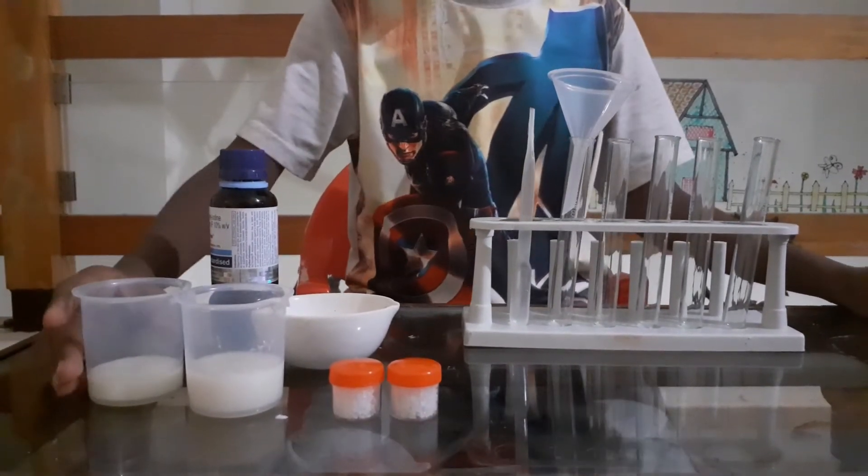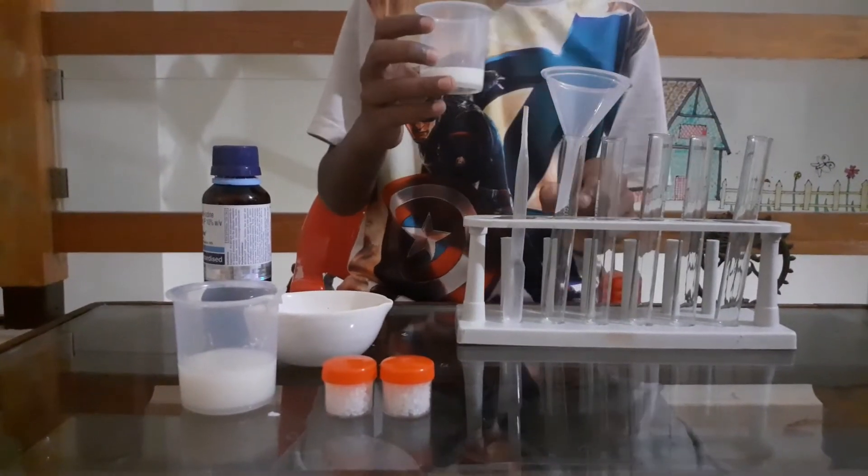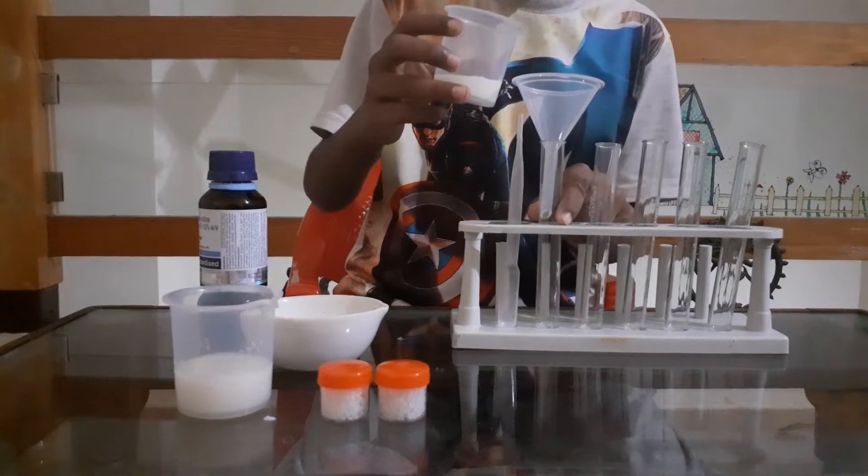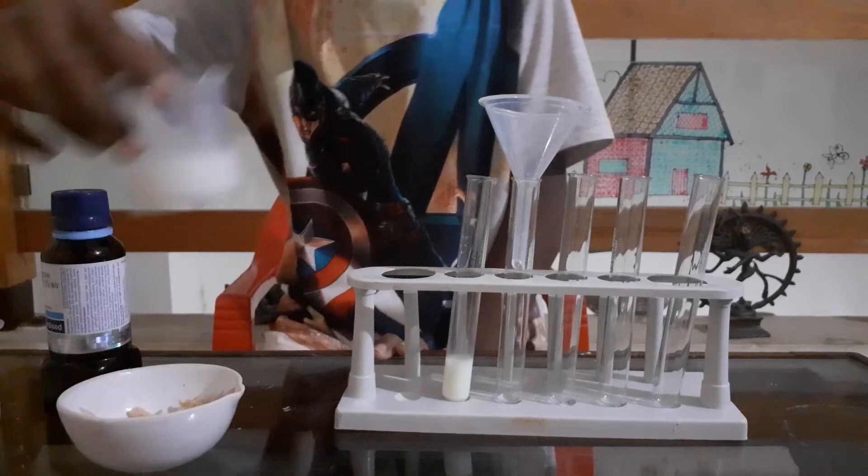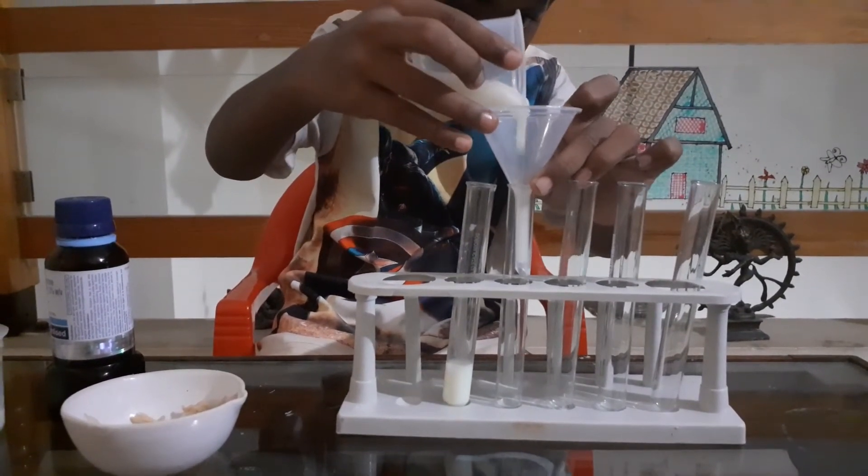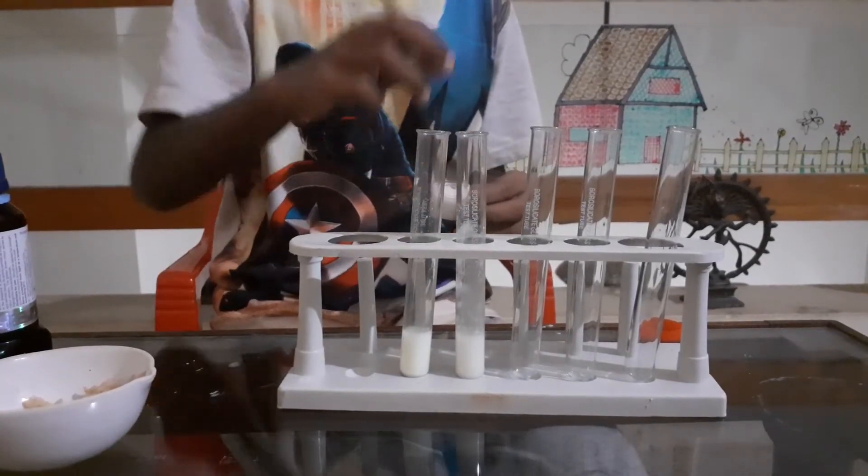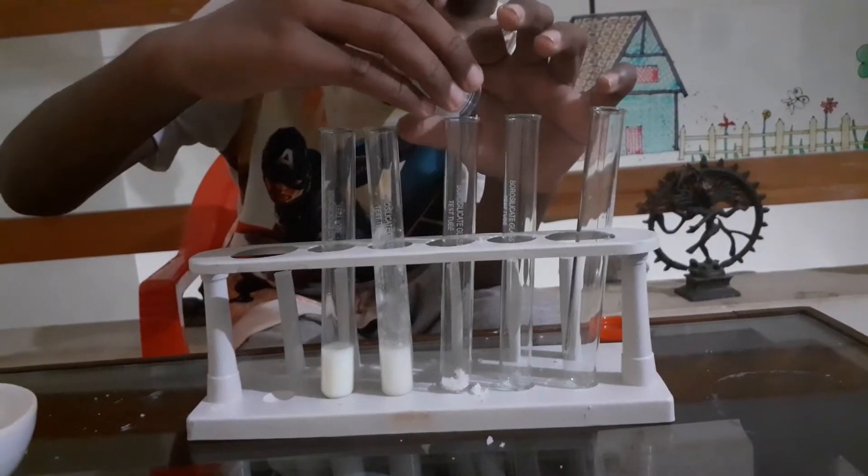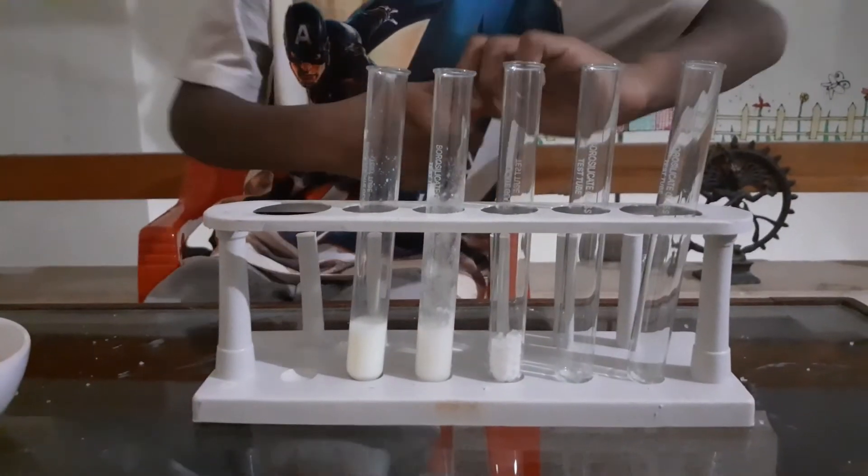First we're going to do milk, which is this. We're going to pour it into this funnel into this test tube. And now we're going to add rice, and now salt, and now sugar.